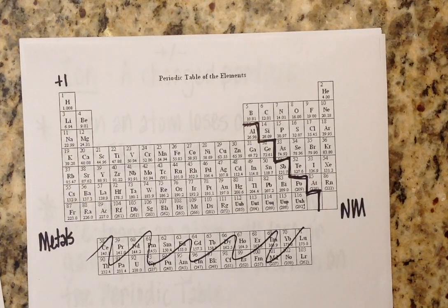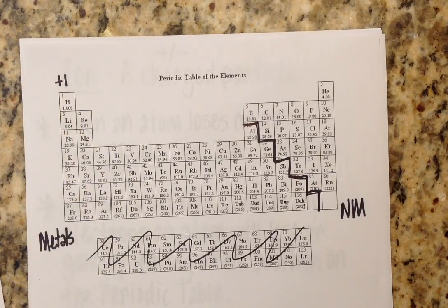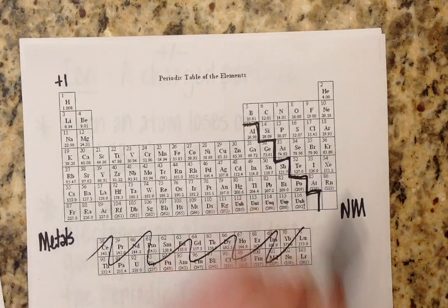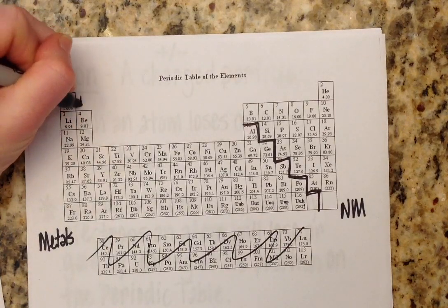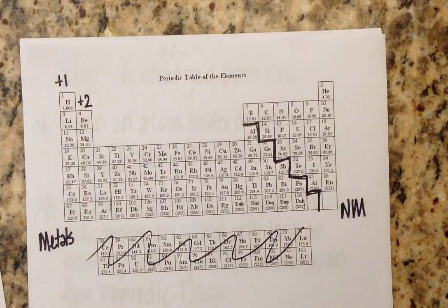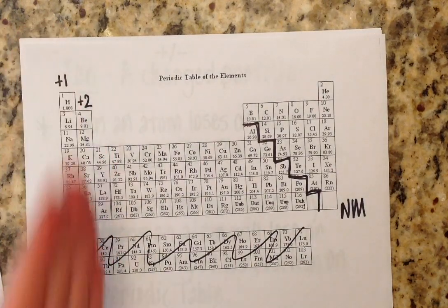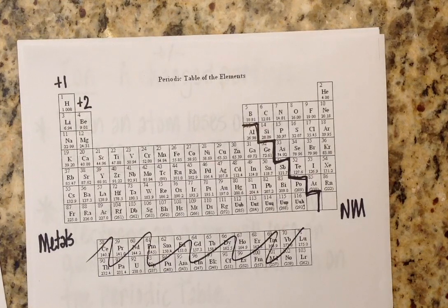Therefore, they will always have a positive one charge when they become an ion, specifically a cation. Group two, these guys have two valence electrons. So they will give away two electrons in order to look like a noble gas. And they will always have a plus two charge. So that's super easy to remember. Plus one, plus two. Those are always the charges of the atoms in those columns when they become cations.